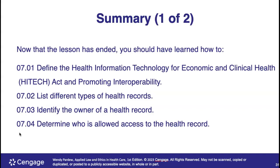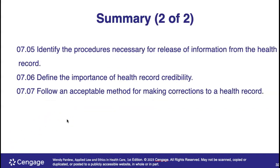That is usually only based on specific situations like drug activity or something that might deal with abuse — there's a list in a slide above and also mentioned in the book. A couple more things: what are the procedures necessary to release information from the health record, and how do you amend a health record? We talked about health records and their credibility — understanding that a patient has the ability to request a change, but providers are also held to a standard of making sure the record is credible and has the correct information.